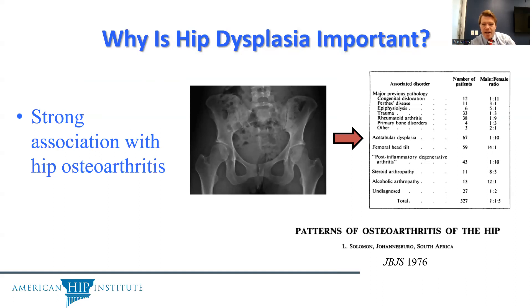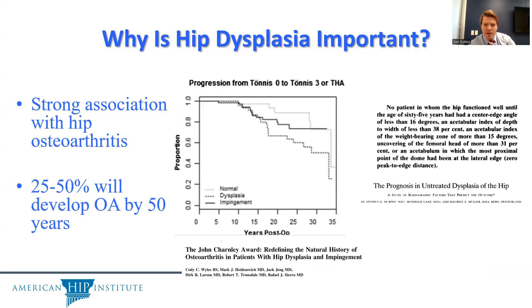Dysplasia is important because there's a strong association with the development of osteoarthritis — not eventual, but early development of osteoarthritis. Data from a study almost 50 years ago showed the predilection for dysplastic patients to eventually need end-stage hip osteoarthritis and total hip arthroplasty. A more recent study showing natural history in patients with a contralateral arthroplasty demonstrated that the dysplastic population in the Kaplan-Meier graph has a much lower survival percentage compared to patients with femoroacetabular impingement or normal acetabular morphology.